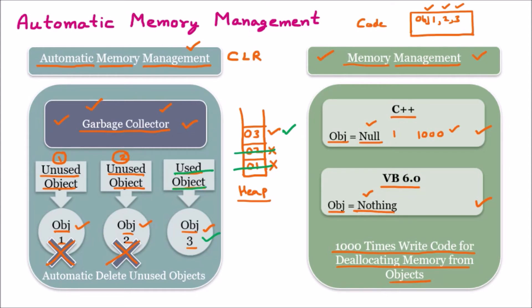With the help of the garbage collector, we automatically delete the unused objects. You are no longer going to write lines like 'object equals null' or 'object equals nothing' — no line is required. The garbage collector automatically does all these things. CLR provides automatic memory management with the help of the garbage collector.